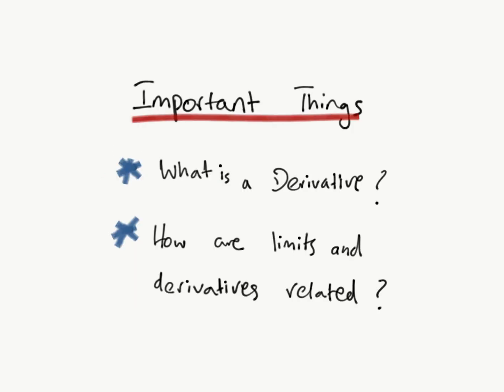So some important things. What is a derivative? It's a way to show the rate of change at a certain point, or it can also be considered as the slope of the tangent line at one point.